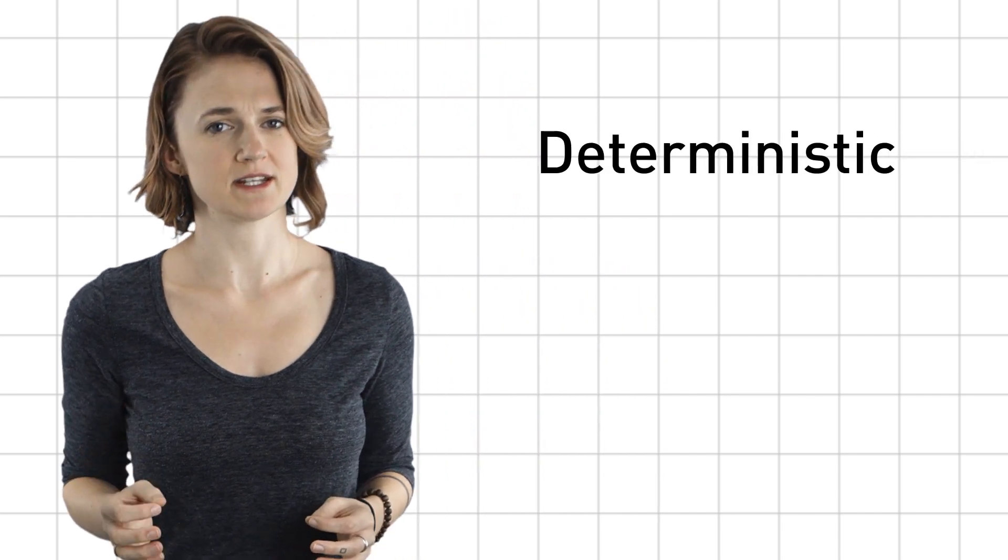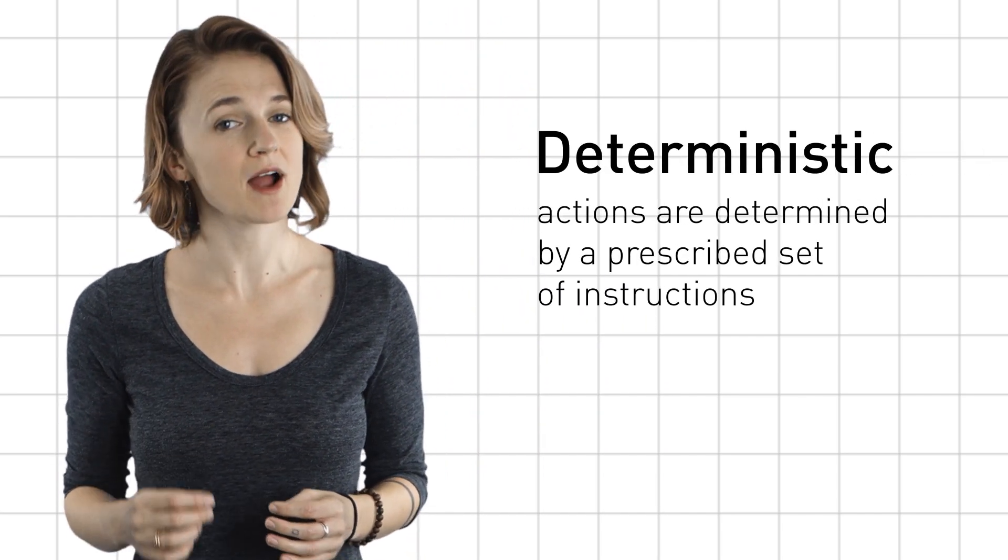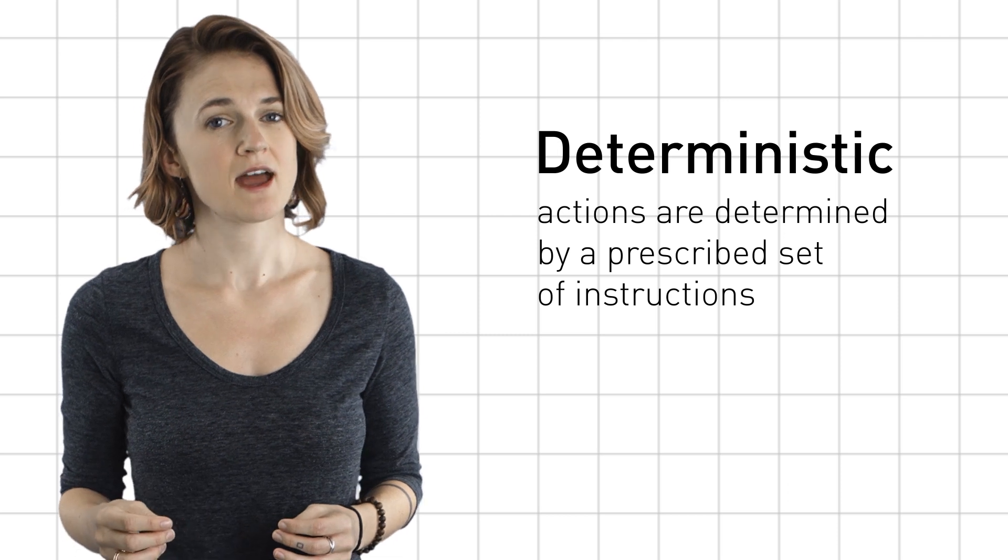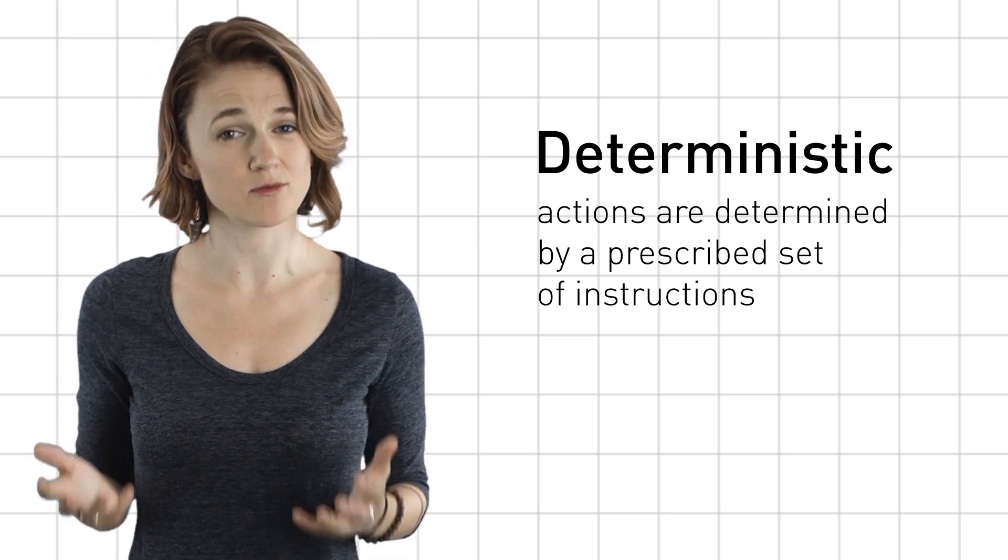Computers are deterministic, meaning their actions are determined by a prescribed set of instructions. How can it possibly produce a random number?